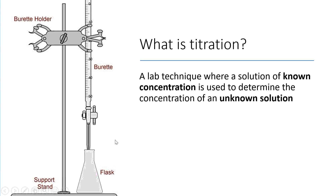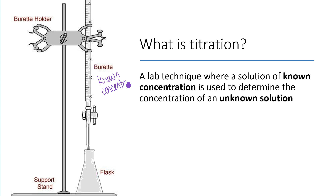Here's a typical lab setup for a titration. What we most often do is put the known solution up here in the burette, which is a very precise measuring device. That's where we usually put the known solution — the solution where you have the known concentration. For example, maybe we know that this solution is 0.1 molar sodium hydroxide.